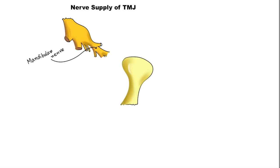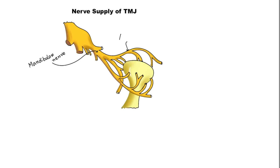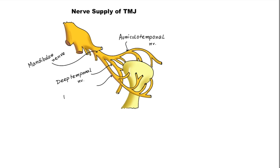Now let's discuss the nerve supply or innervation of TMJ. Most innervation is provided by the auriculotemporal nerve, as it leaves the mandibular nerve behind the joint and ascends laterally and superiorly to wrap around the posterior region of the joint. The other two nerves — the deep temporal and masseteric — supply the anterior portion of the TMJ.